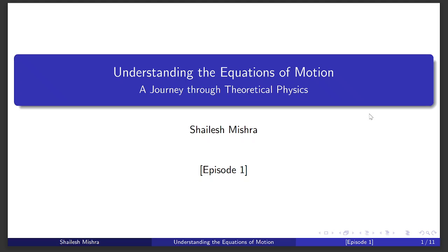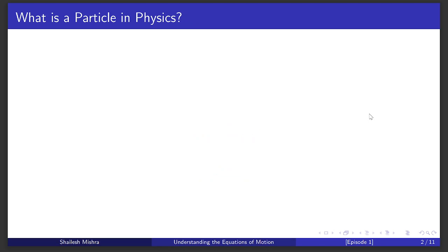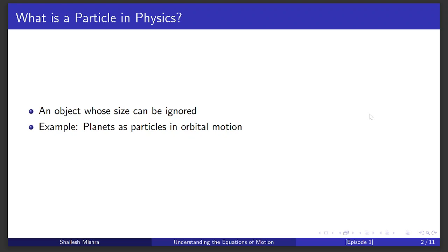We start with a basic idea in physics: a particle. Think of it as something so tiny that its size doesn't matter for our calculations. For example, planets are like particles when we study how they move around the Sun, but not when we look at how they spin.